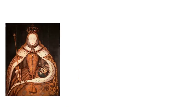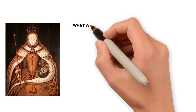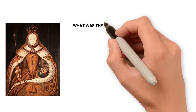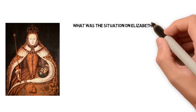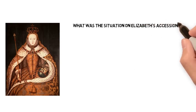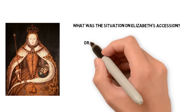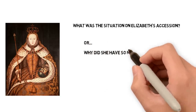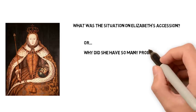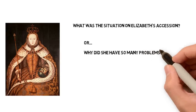We're going to start by looking at Early Elizabethan England from 1558 to 1588. Here's the woman herself, England's most famous queen, Elizabeth the First. She is the daughter of Henry the Eighth and one of the most famous Tudors. The exam board is going to ask you: what was the situation on Elizabeth's accession? Why did she have so many problems?